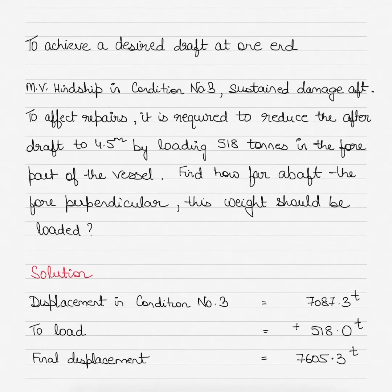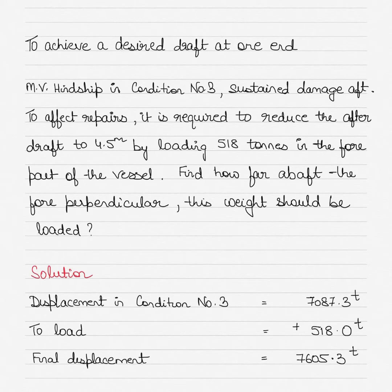Hi guys, today we'll be solving another question from the MV Henship ship stability series. If you are watching this video, make sure you also watch all the previous videos, links of which are given in the description below. To solve the question in this video you will need access to the MV Henship tables. The topic for today is how to achieve a desired draft at one end of the vessel — specifically, the aft part.